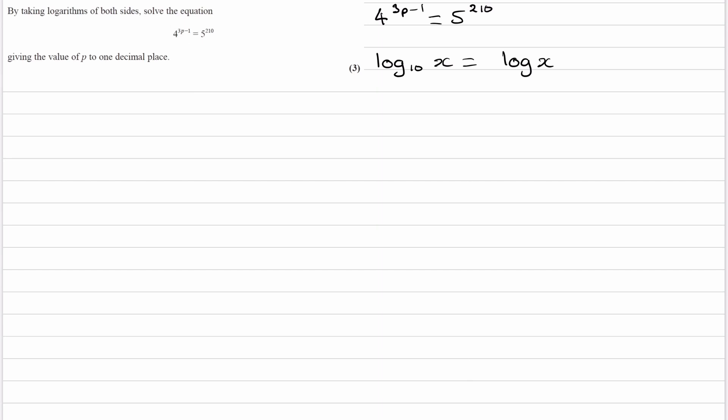We can also use log to the base 4. So we have a couple of different options. I'm going to start with actually the log to the base 4 option. So if we do log to the base 4 of 4 to the power of 3p minus 1 is equal to log to the base 4 of 5 to the power of 2.10.